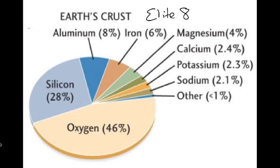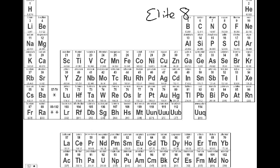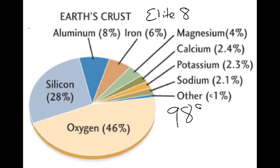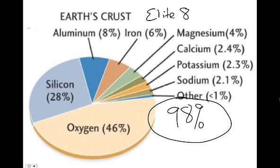These elite eight elements are so common that instead of all 90 elements making up the entire crust, these elite eight make up about 98% of all the elements found within the Earth's crust. Elements are things that make up all matter, and matter is everything - anything you can name. These eight elements - oxygen, silicon, aluminum, iron, magnesium, calcium, potassium, and sodium, along with a few other trace amounts - make up 98% of the Earth's crust. That's why I call them the elite eight.